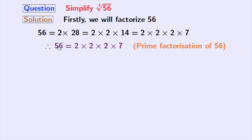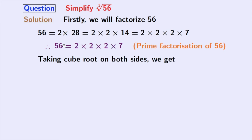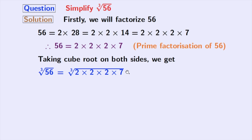Now, we will take the cube root on both sides. And doing that, we get cube root of 56 is equal to cube root of 2 times 2 times 2 times 7. After grouping, we get cube root of 2 times 2 times 2, times cube root of 7.